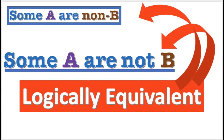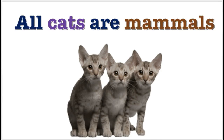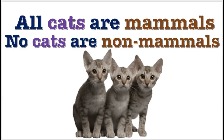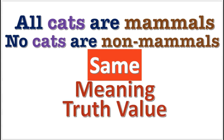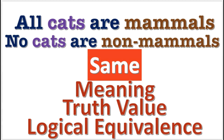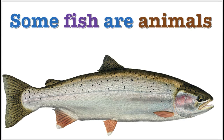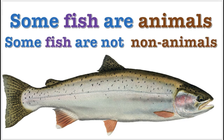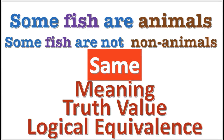Obversion gives logically equivalent results for all four types of categorical propositions. For example, the obversion of this A-proposition, 'all cats are mammals,' is 'no cats are non-mammals,' which means the same thing — they have the same truth value, they are logically equivalent. The obversion of this I-proposition, 'some fish are animals,' is 'some fish are not non-animals,' which means the same thing. Same truth value, logically equivalent.